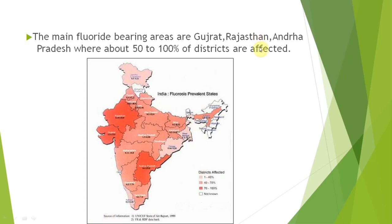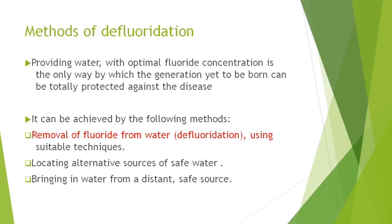Mainly Gujarat, Rajasthan, and Andhra have 50 to 100 percent of their districts affected. In Kerala, Alappuzha and Palakkad are mostly affected. These states have a severe problem with fluorosis. So defluoridation is the answer — we are removing fluoride from drinking water. We can either remove fluoride from water or go for an alternative source of safe water from distant sources, but the most convenient and feasible method is defluoridation.